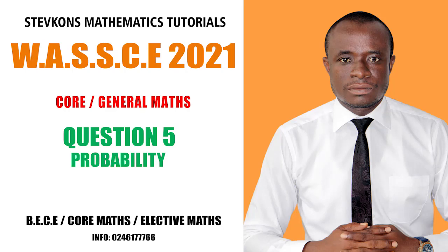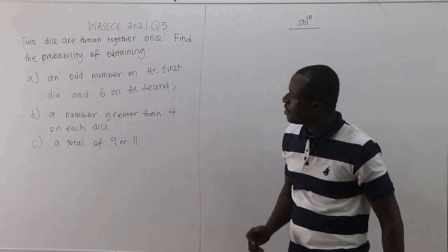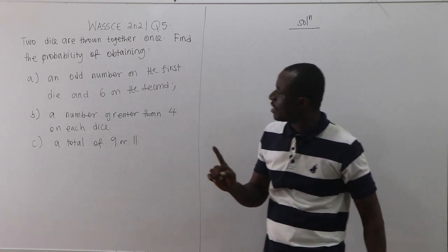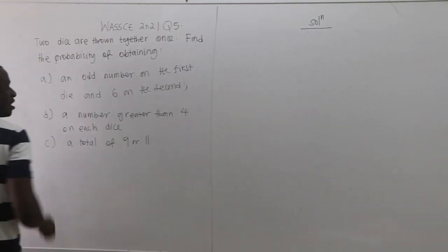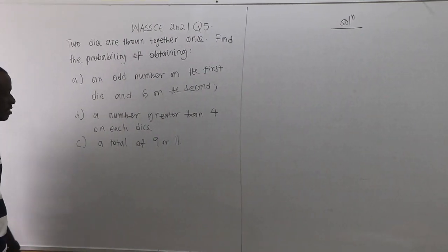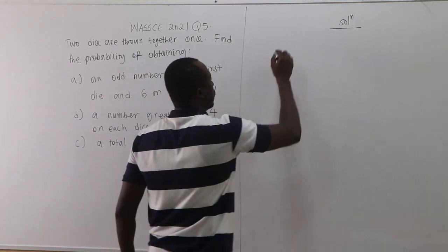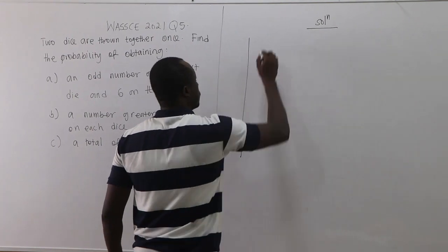Now let's consider this question — that is WASSCE 2021 question number five. Two dice are thrown together. Find the probability of obtaining: part A, an odd number on the first die and six on the second; part B, a number greater than four on each die; and part C, a total of nine or eleven. Now let's work out the sample space. Clearly, two dice, each numbered one to six.